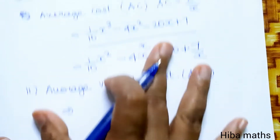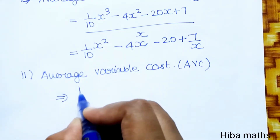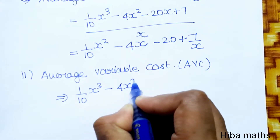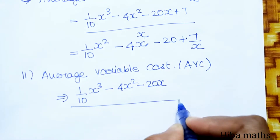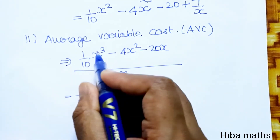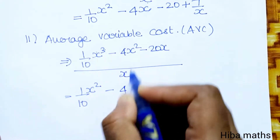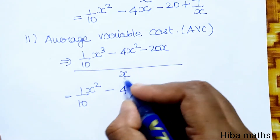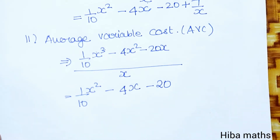The constant term is 7. So AVC equals 1/10 x³ minus 4x² minus 20x, all divided by x. Cancelling x, we get 1/10 x² minus 4x minus 20. This is the AVC value.